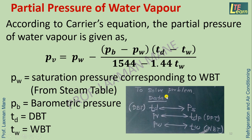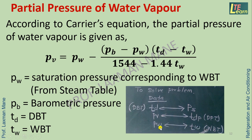In numerical problems, the dry bulb temperature is associated with the value of saturated or barometric pressure in the steam table. The dew point temperature value in the steam table corresponds to the partial pressure of water vapor, and the wet bulb temperature is associated with the value of PW in the steam table.